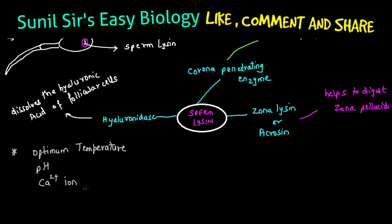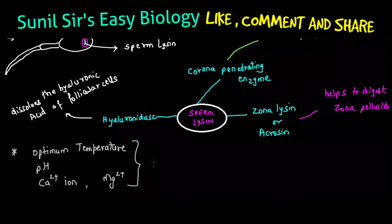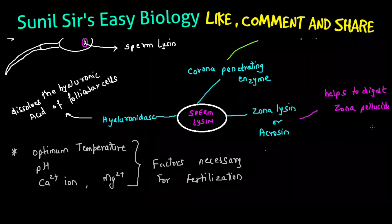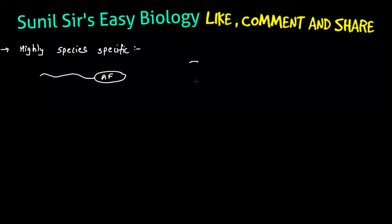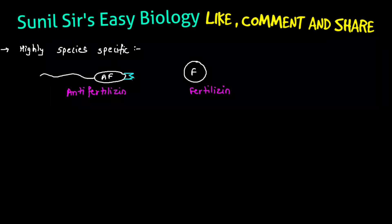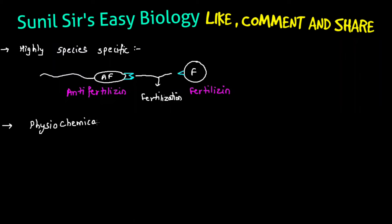The conditions required for fertilization are: optimum temperature is very important; if the proper temperature is not maintained, fertilization will not occur. pH, calcium, and magnesium are also very important factors necessary for fertilization. Fertilization is also highly species specific — this means a human male sperm will only fertilize a human female egg, because the receptors must match between the sperm and the egg.